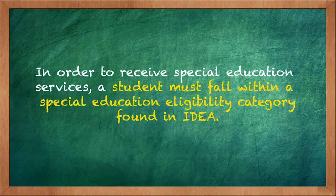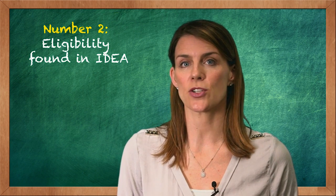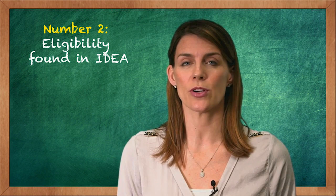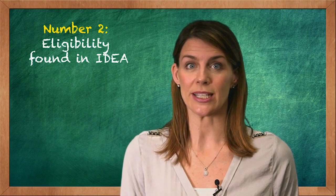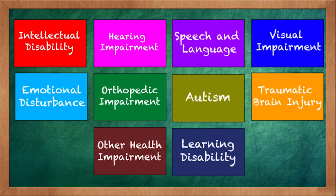Let's discuss the second prong. In order to receive special education services, a student must fall within a special education eligibility category specifically found in IDEA. The eligibility categories are used as umbrella terms that capture many more disabilities. Students may be considered disabled even if their specific disability is not listed, as long as the disability can be put under one of the eligibilities that are listed.